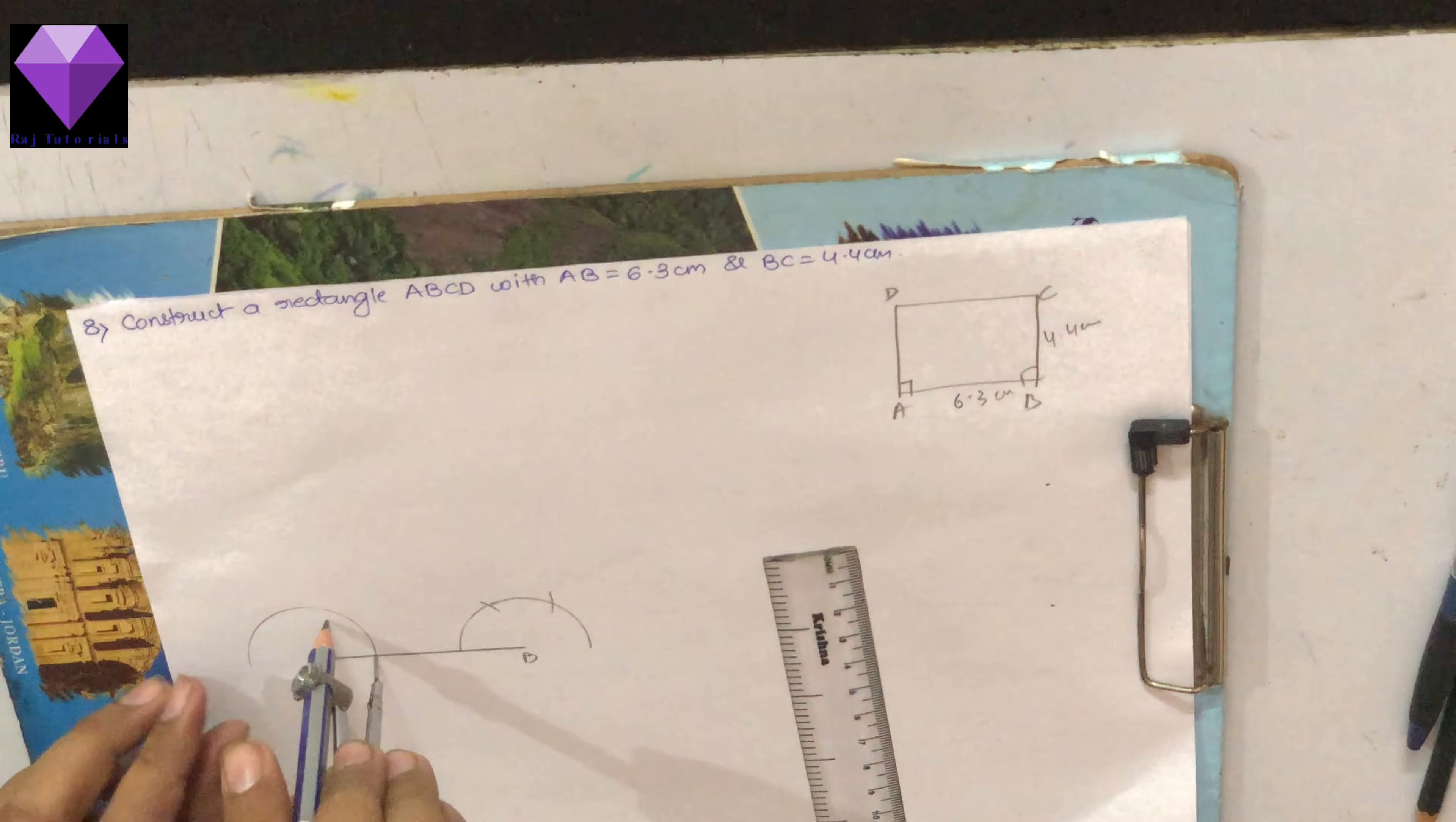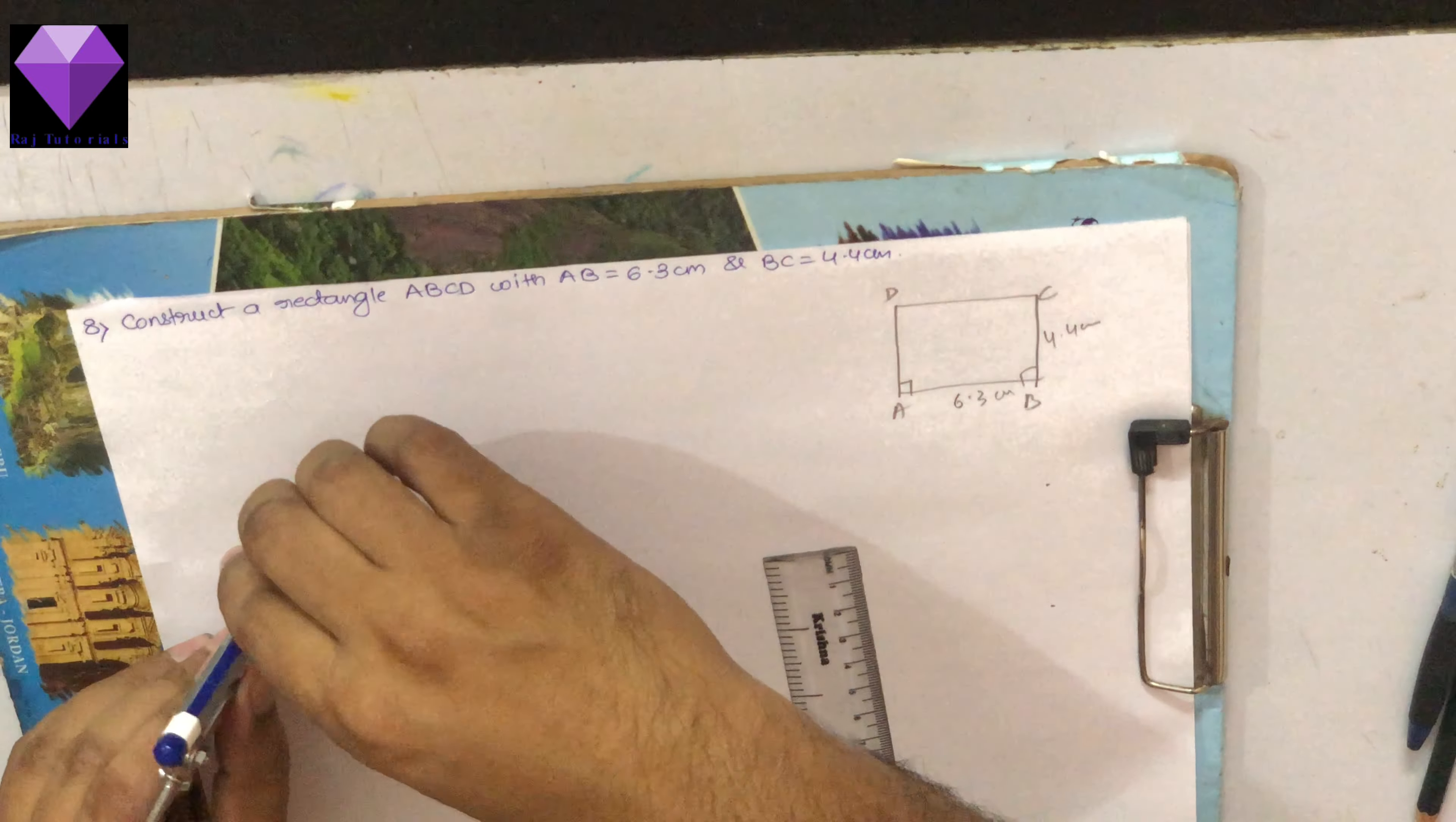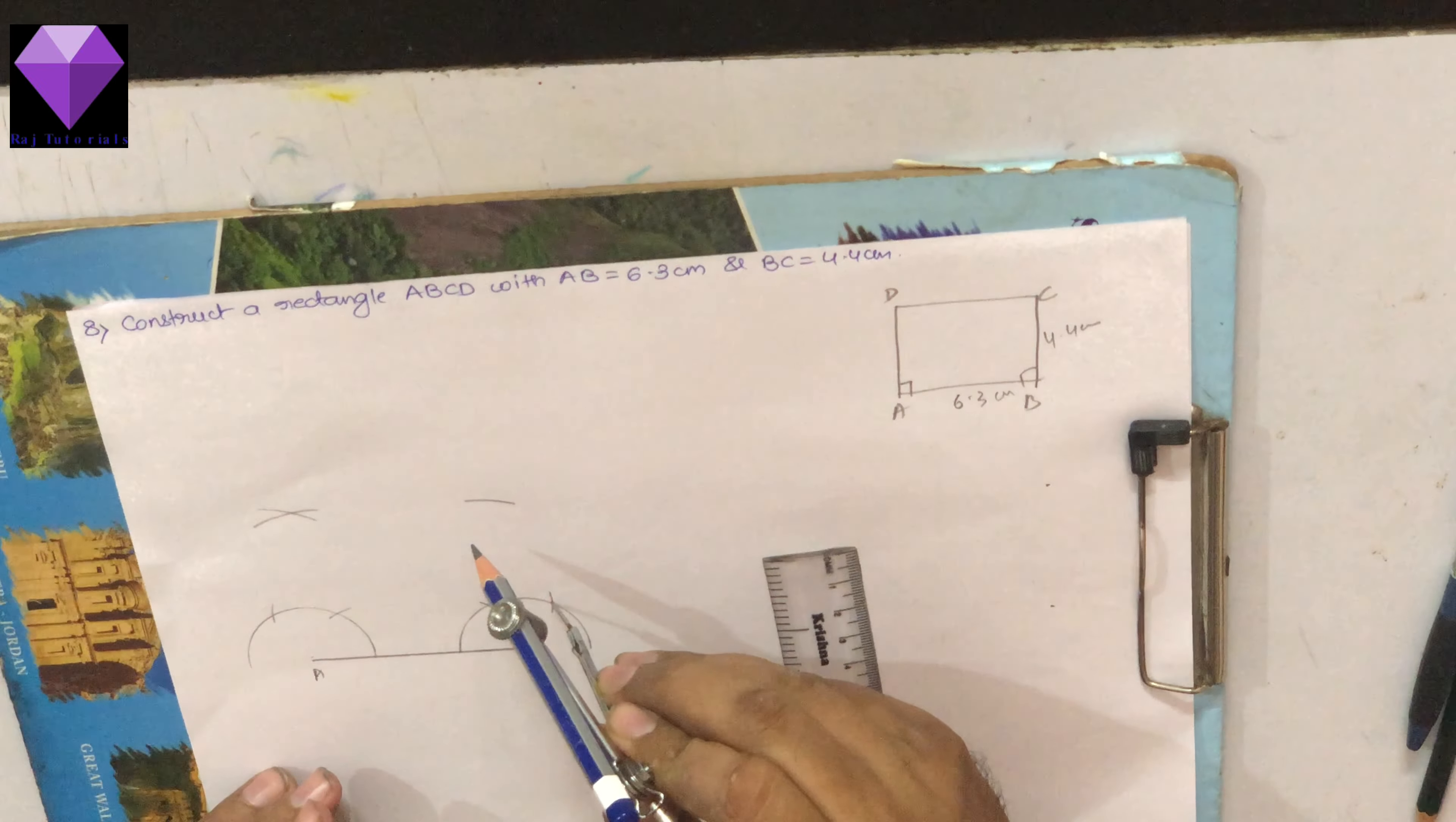Now I will be making 90 degree here by bisecting 60 and 120. So one arc from 60, one arc from 120. Same way here also one arc from 60, one arc from 120.